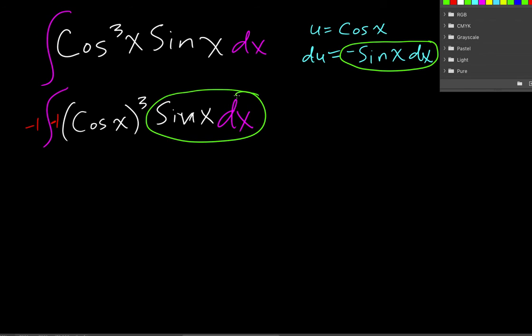So I have sine x dx, and I have a negative one. So I take all of those, those become my du. Now, I just need to find cosine, and that's my u. So that's u. And I still have my three, still have my integration sign, and I still have that negative one out in front.